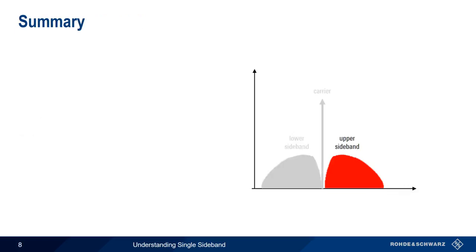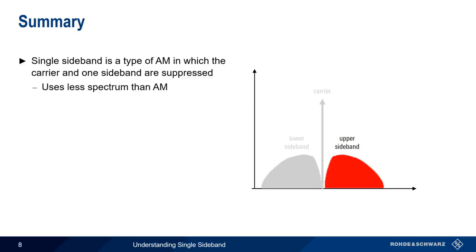Let's summarize what we've learned. Single sideband is a type of amplitude modulation in which the carrier and one of the sidebands is suppressed. This is done for two main reasons. First, single sideband uses less spectrum than conventional amplitude modulation. And second, power that would have gone into the carrier and the redundant sideband can instead be placed into the transmitted sideband.